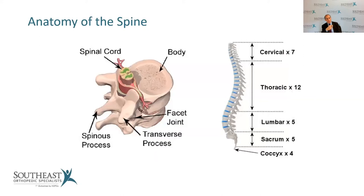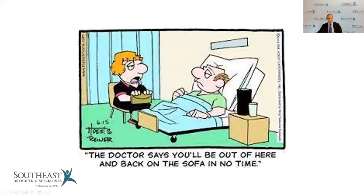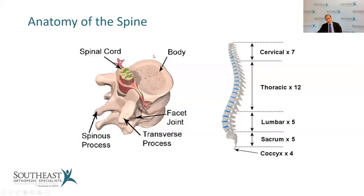When I see a patient, the first thing I need to do is assess that person. We need to have a good handle of anatomy. I'll review some of the basics of spine anatomy. Here we have a diagram of the vertebral body, and in between each vertebral body is a disc that acts as a cushion.